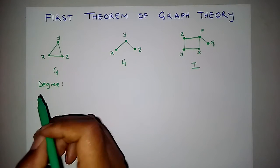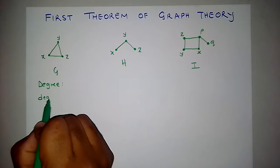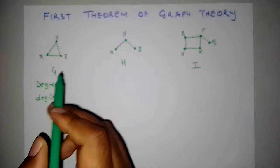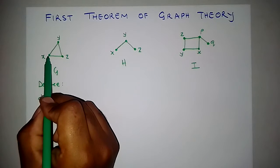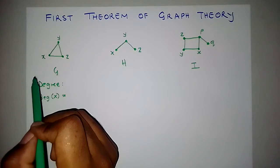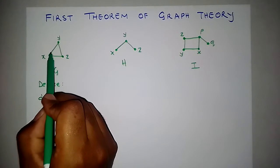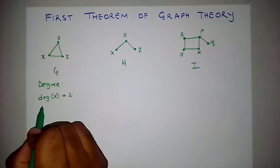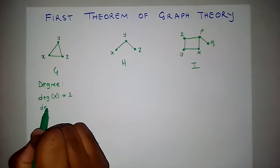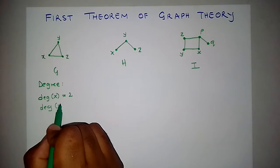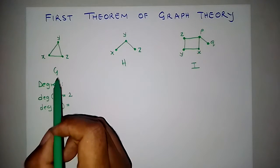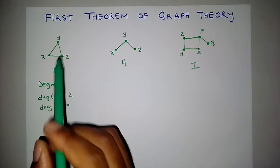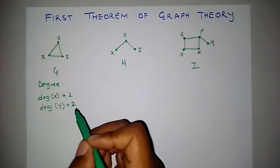Let's look at Graph G first. The degree of vertex X — we look at the number of vertices adjacent to X, and we've got 1, 2. So the degree of vertex X is 2. The degree of vertex Y in Graph G is also 1, 2 — so it's 2.